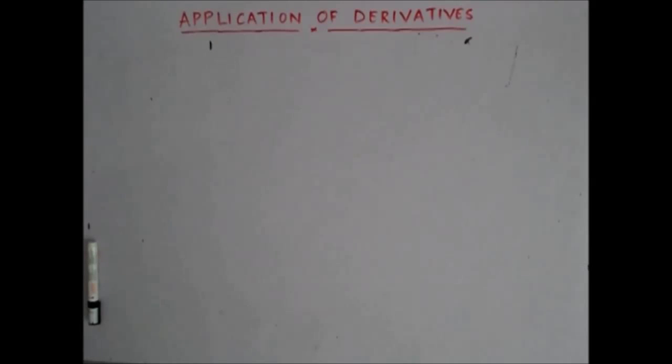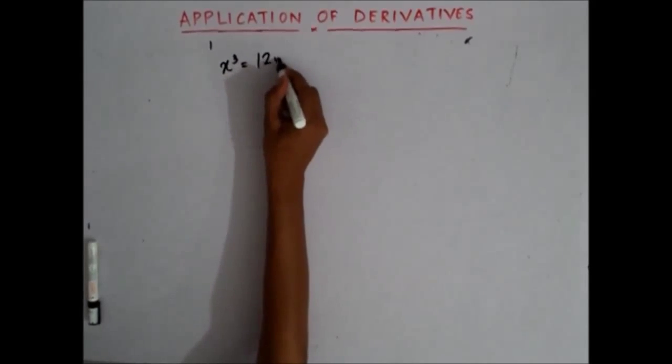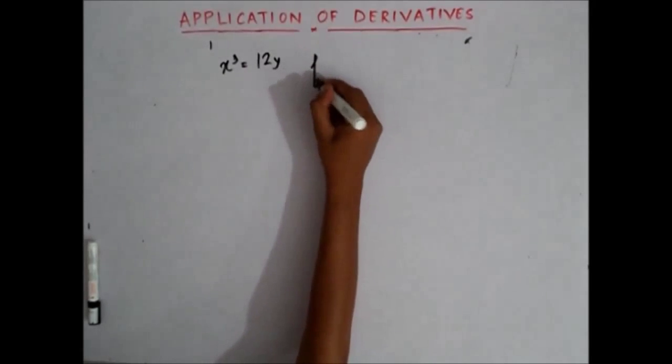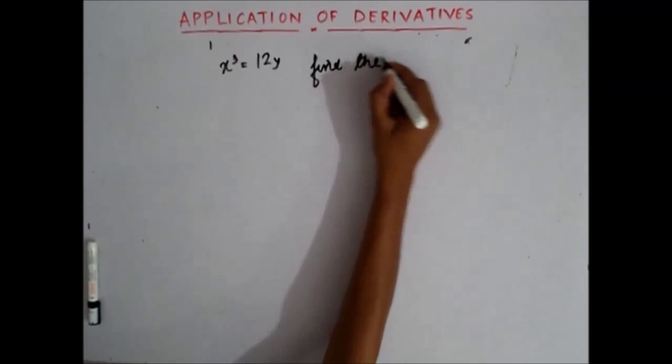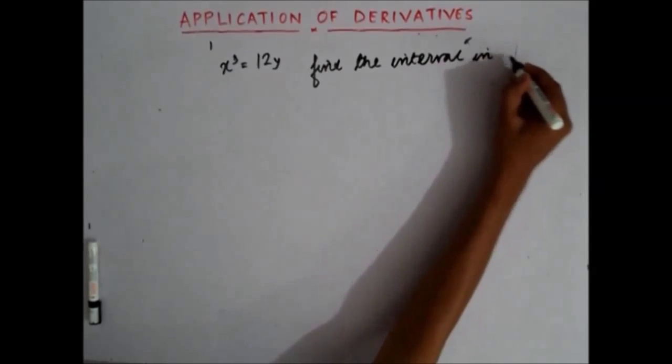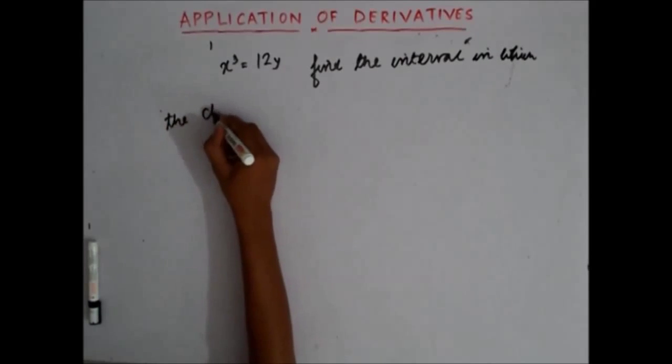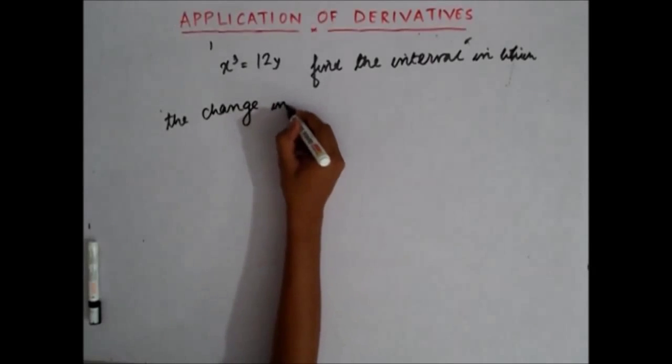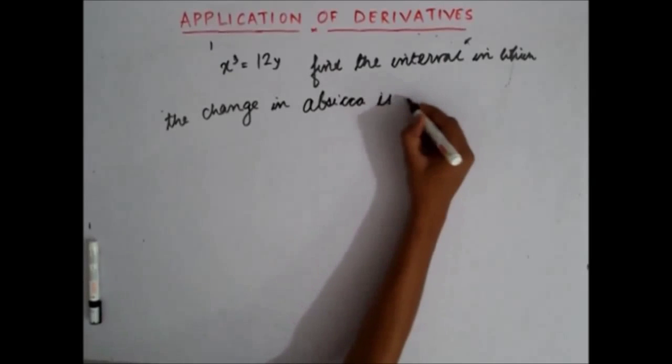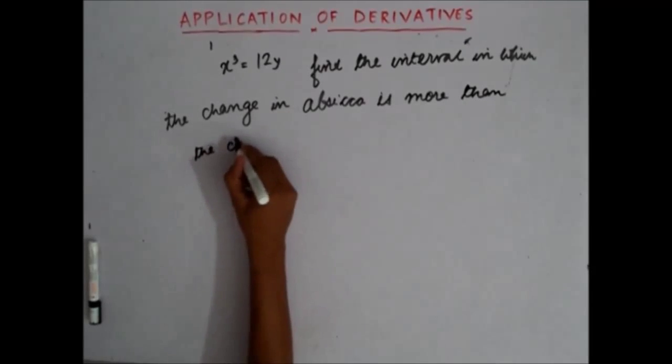Let's say you have been given a curve x cube equals to 12y. Now you have to find the interval in which the change in abscissa is more than the change in ordinate.